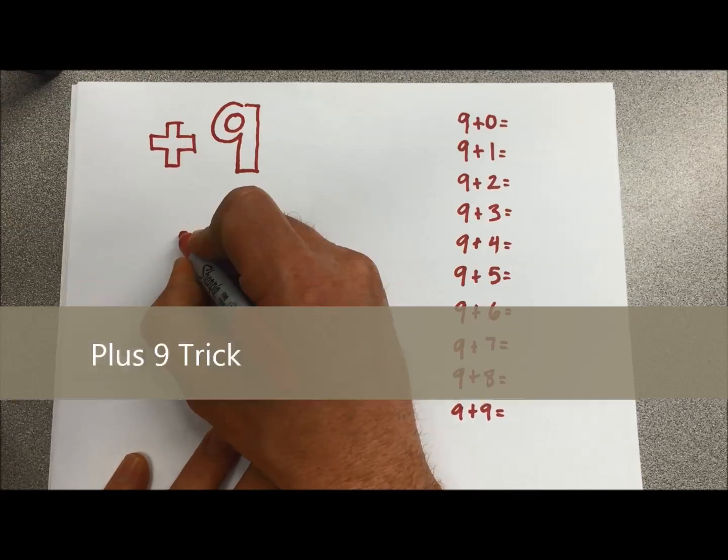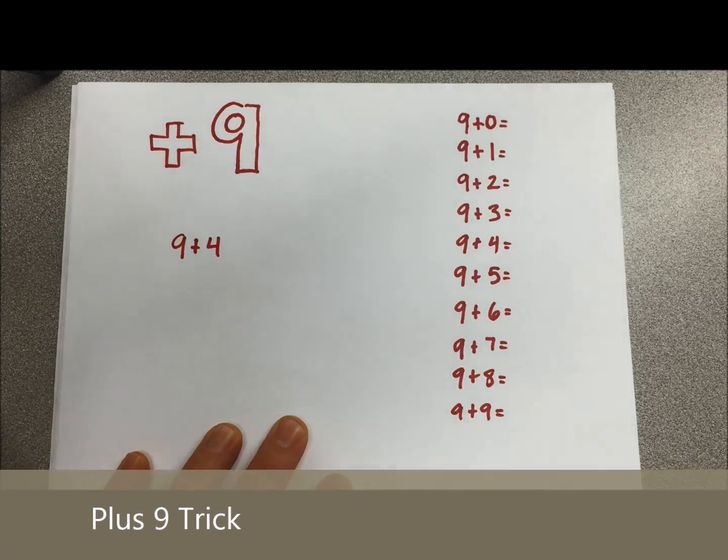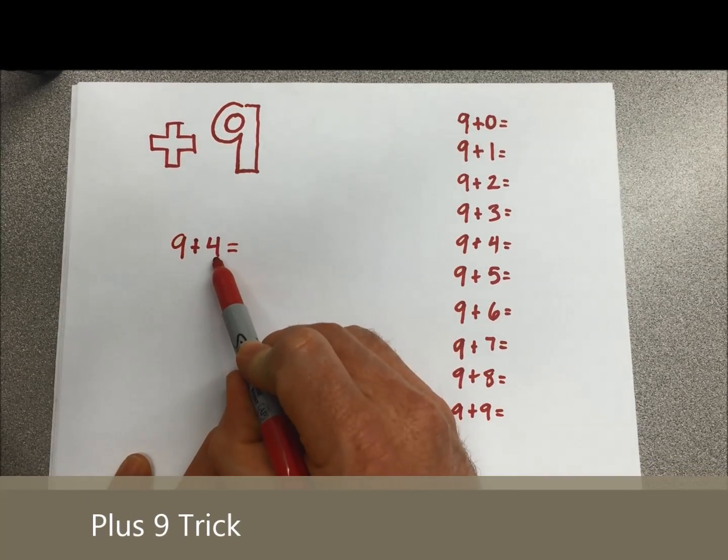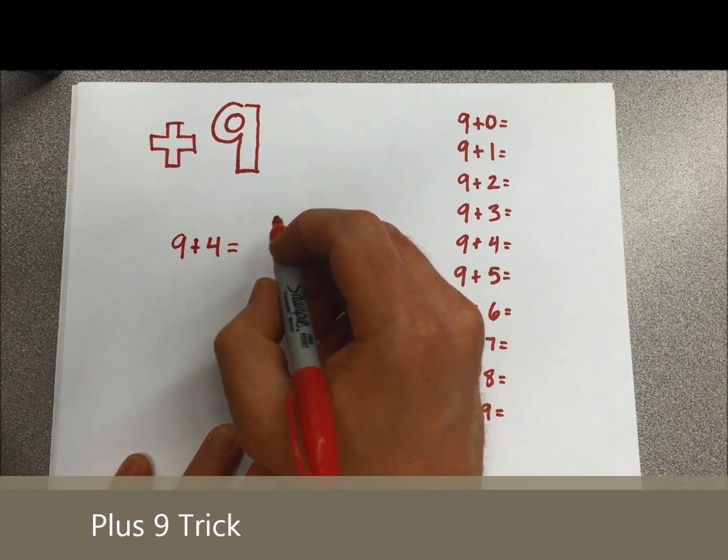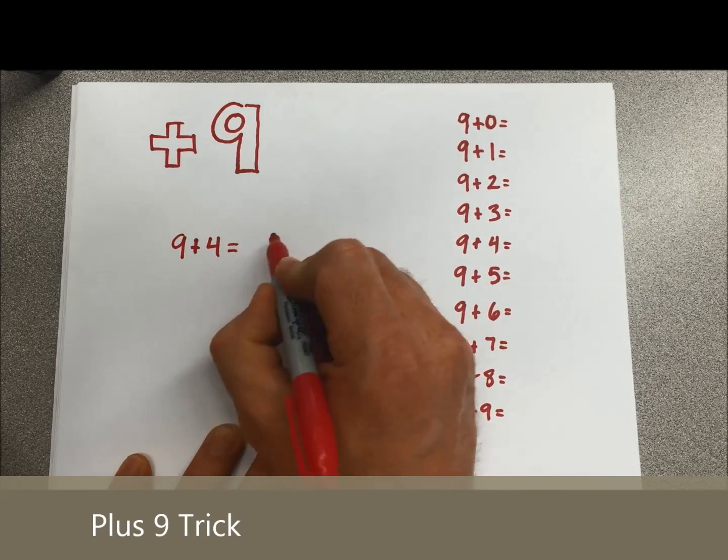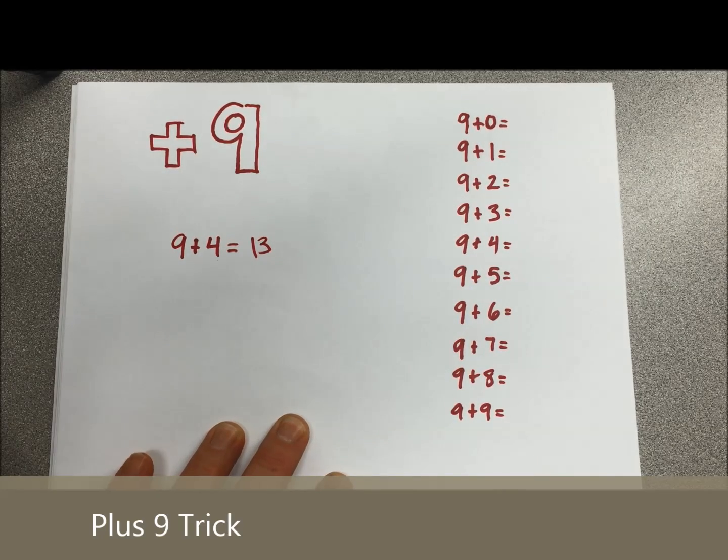Let's take an example like 9 plus 4. All you have to do is take a look at the number you're adding on to 9, subtract 1 from it or drop down 1, drop from 4 down to 3, slap a 1 in front, and your answer is 13.